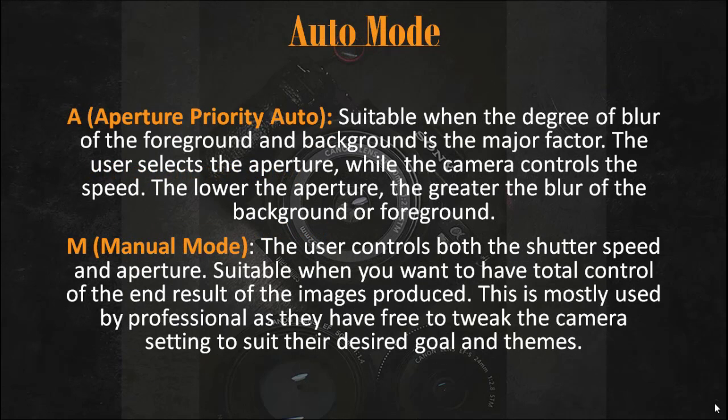Aperture Priority mode (A) is the opposite of Shutter Priority — suitable when the blur of the foreground or background is the major factor. The user sets the aperture while the camera controls the shutter speed. The lower the aperture, the greater the blur of the background and the bokeh effect. In Manual mode (M), the user has total control of both shutter speed and aperture — suitable when you want full control of the end result. This is mostly used by professionals who are free to tweak camera settings to suit their desired goals.